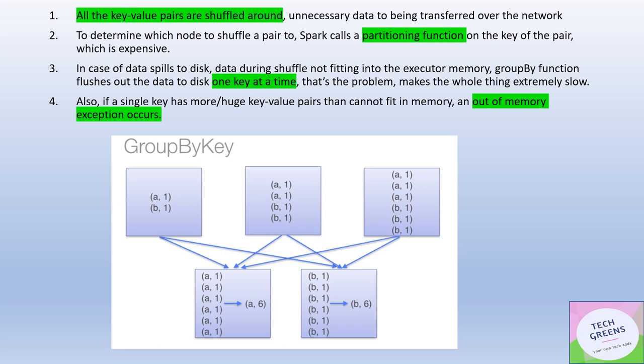So all the key-value pairs are shuffled around. If you see here, all the key-value pairs are shuffled around. Like key A is shuffled from all these different partitions to one single node. If you see here I have one, two, three, four, five, six - six tuples, six object packets have moved over the network as part of the shuffle.